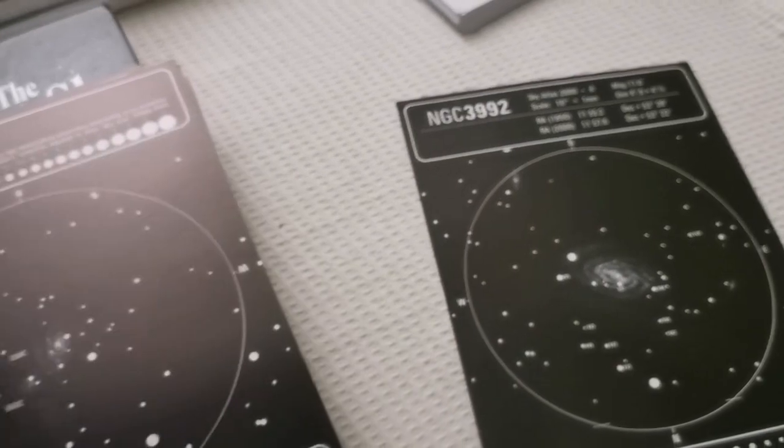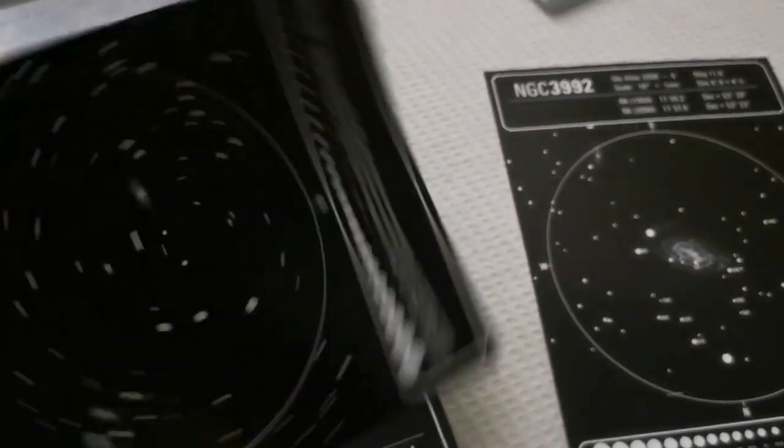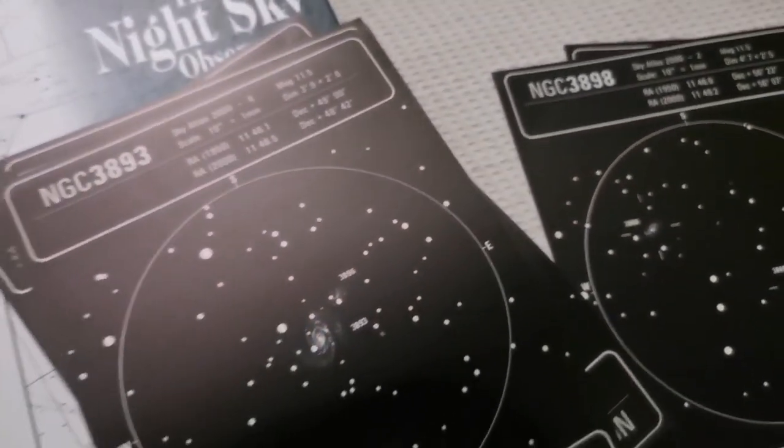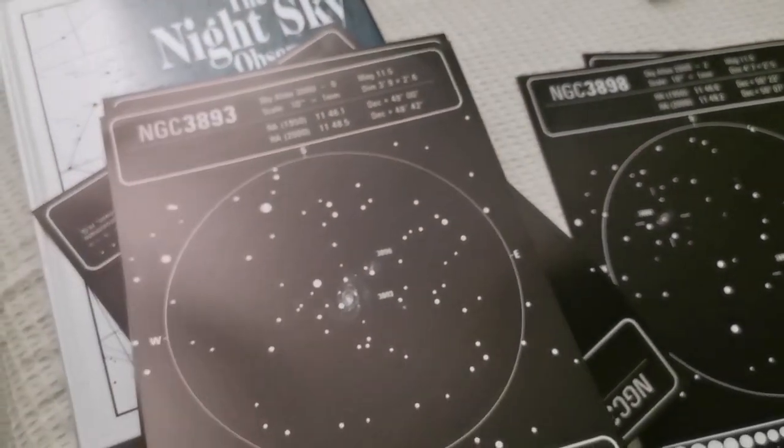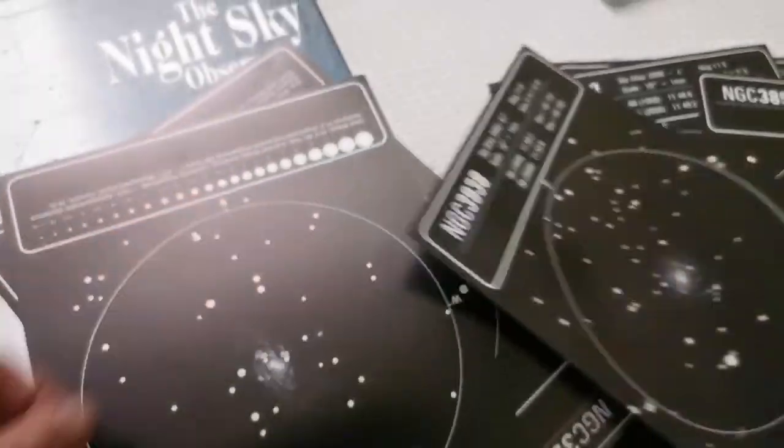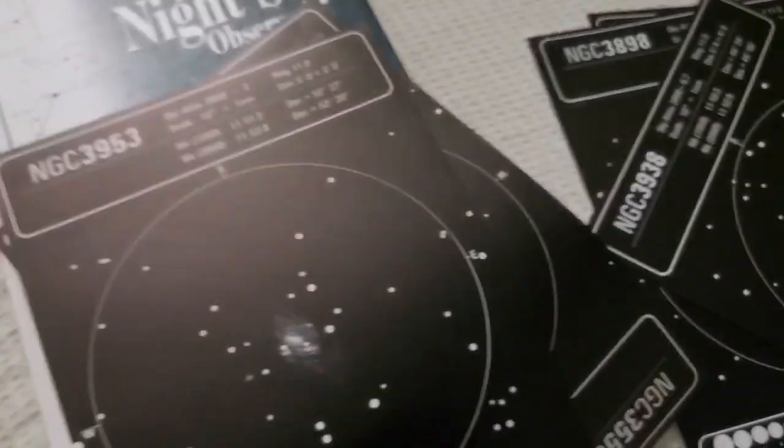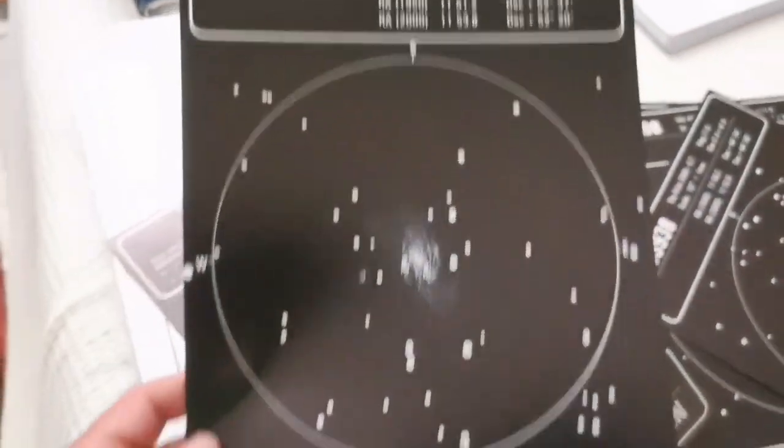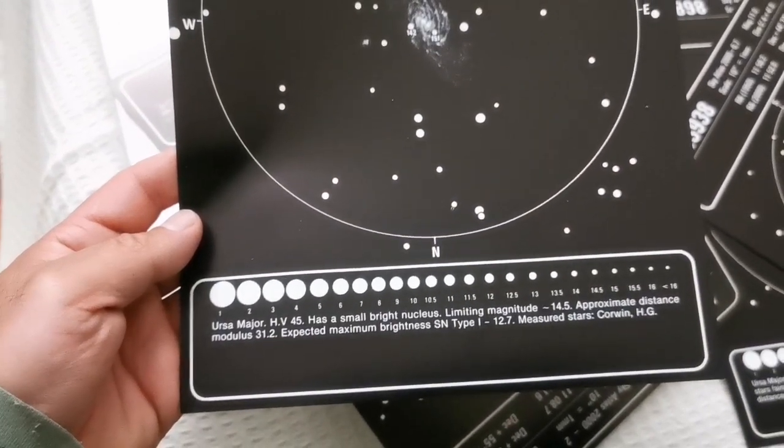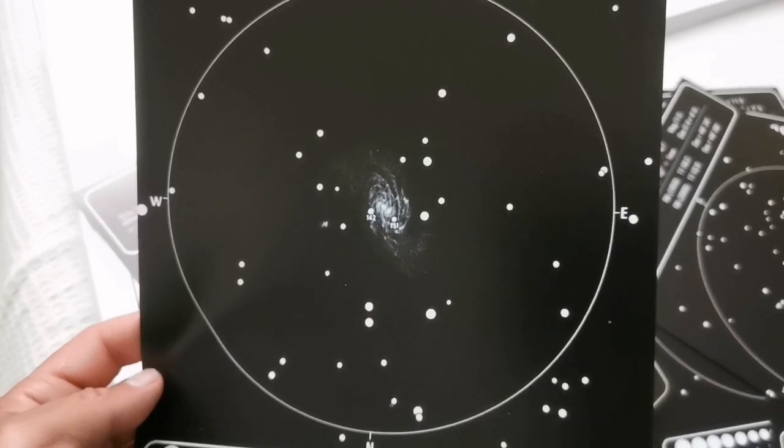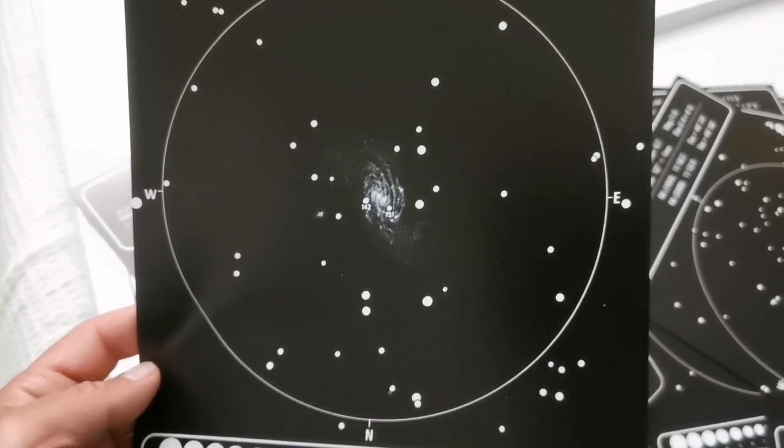This is Messier 109, NGC 3992, and these are the field stars you can see in this galaxy. Here's NGC 3953. There's a small bright nucleus as I mentioned, and these are all the field stars you can see in this galaxy.